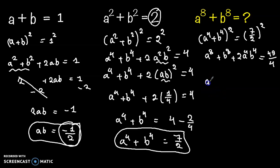So a⁸ plus b⁸ equals 49 over 4 minus 2a⁴b⁴. Now 2a⁴b⁴ is equal to 2 times (ab)⁴, and ab equals minus 1 over 2 to the power 4.